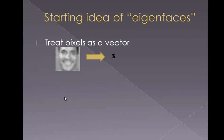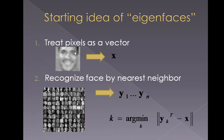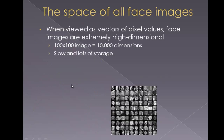The basic idea is to treat each and every pixel as a vector. So if I have a face in a 100x100 image, I would have 10,000 pixels for one particular image. If I have 50 such images, I would be dealing with 50 x 10,000 pixels. The idea is to get a new image and map it to the closest face possible. This is very slow and takes up a lot of storage because generally the number of images in a database is huge.